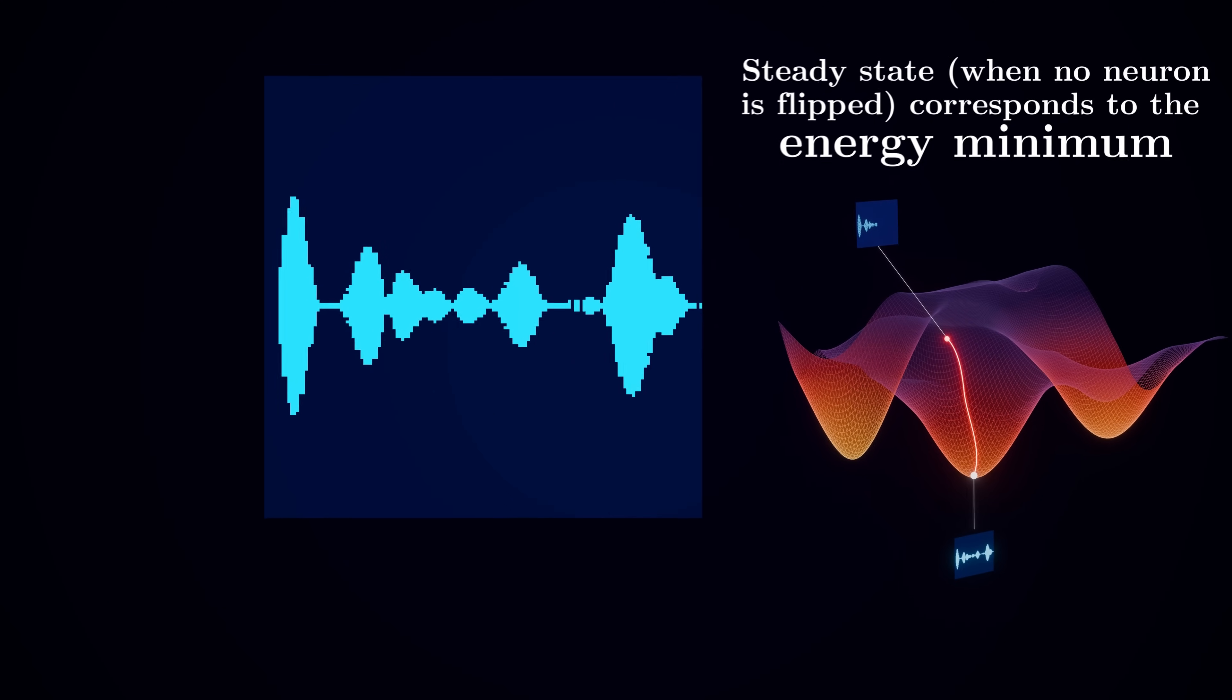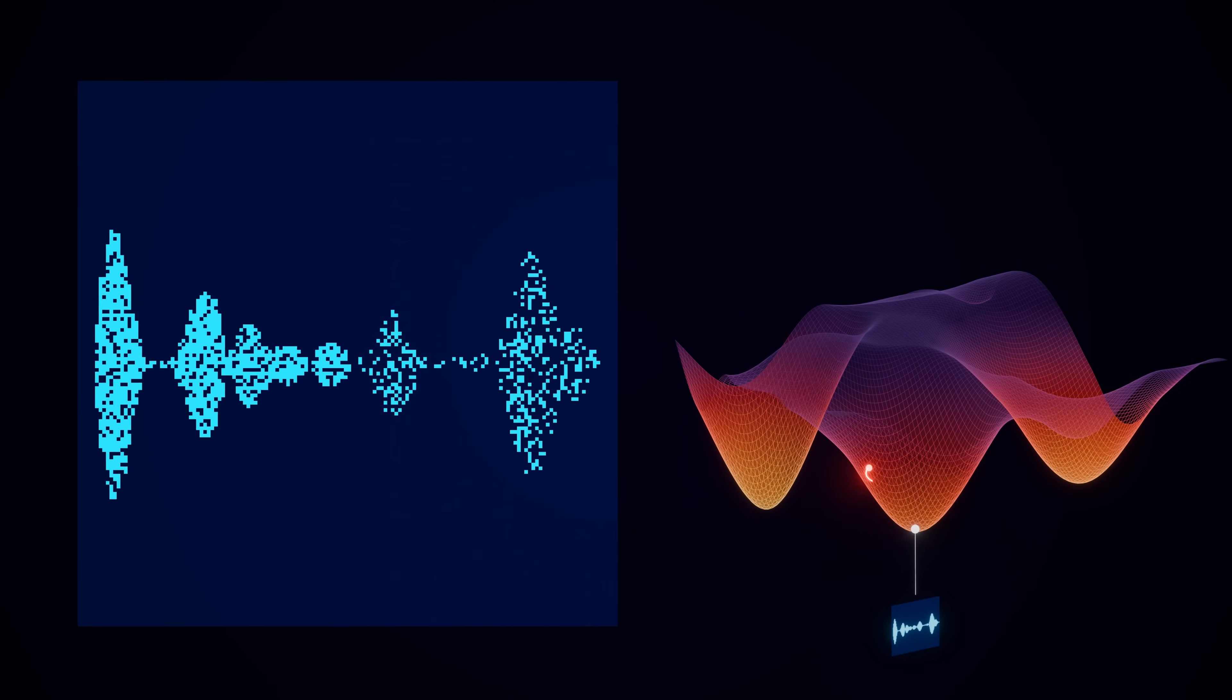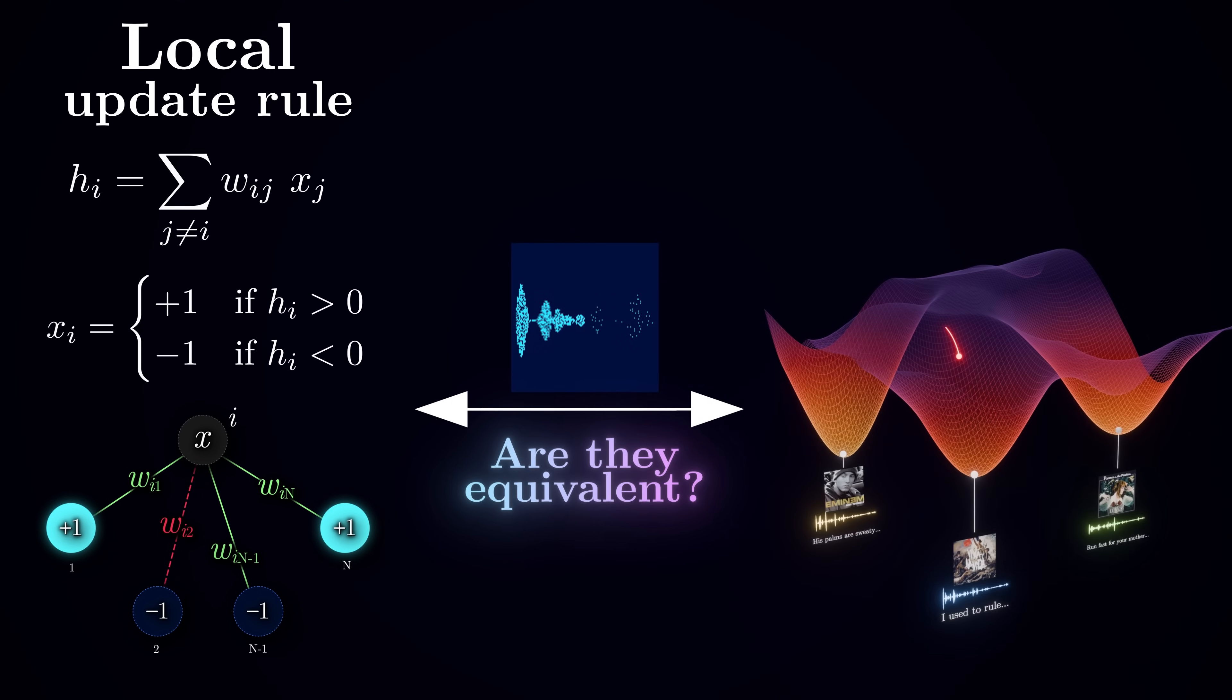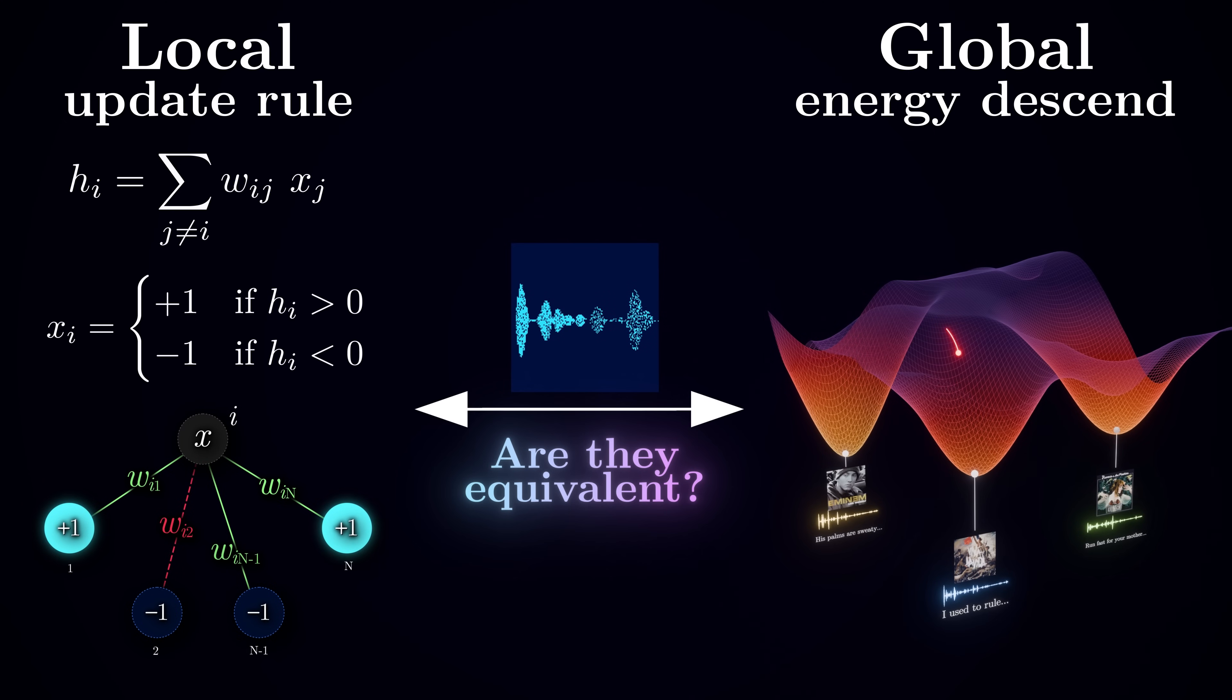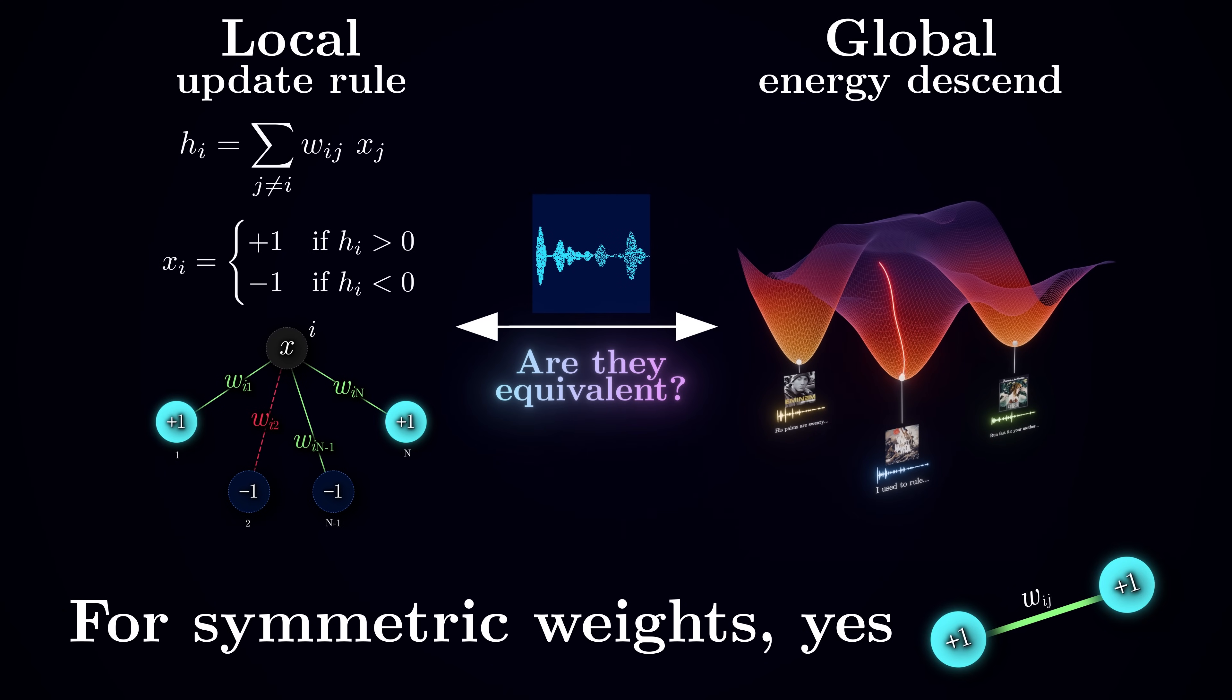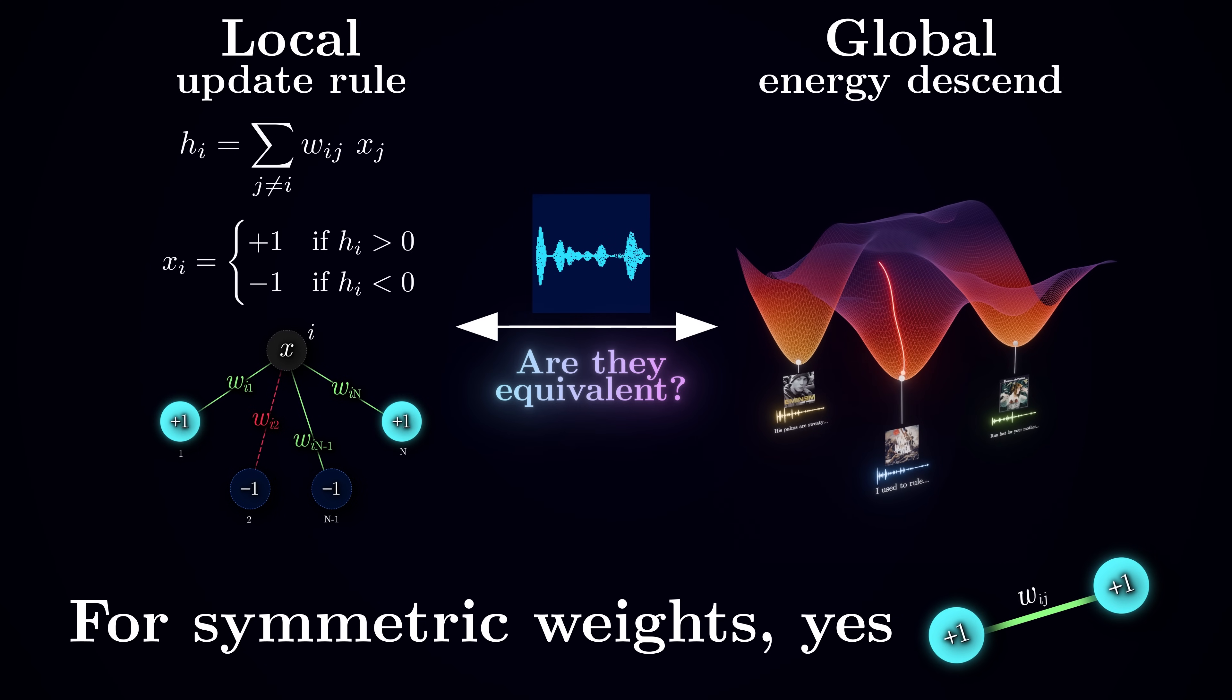Now you might be wondering, is the network guaranteed to reach such a stable configuration? Could we possibly stumble into a particularly unlucky set of states and get stuck in a never-ending loop of flipping neurons back and forth? In other words, is such iterative flipping of one neuron at a time equivalent to doing a descent along the energy surface? This is where we come back to the point about symmetric weights. It turns out that there is a mathematical proof that I'm not going to cover here, stating that as long as your weights are symmetric, this simple majority vote single neuron update rule is guaranteed to eventually converge to a stable configuration if you do it enough times.